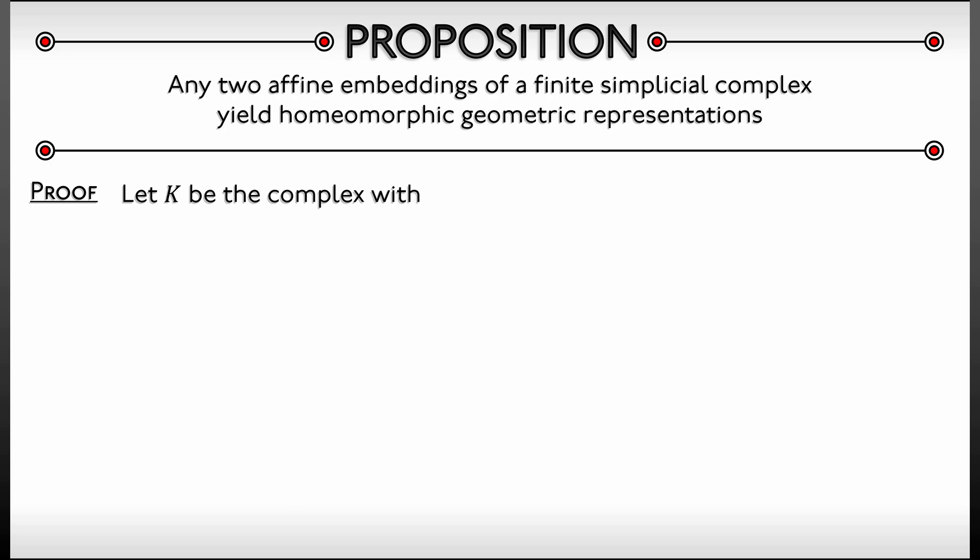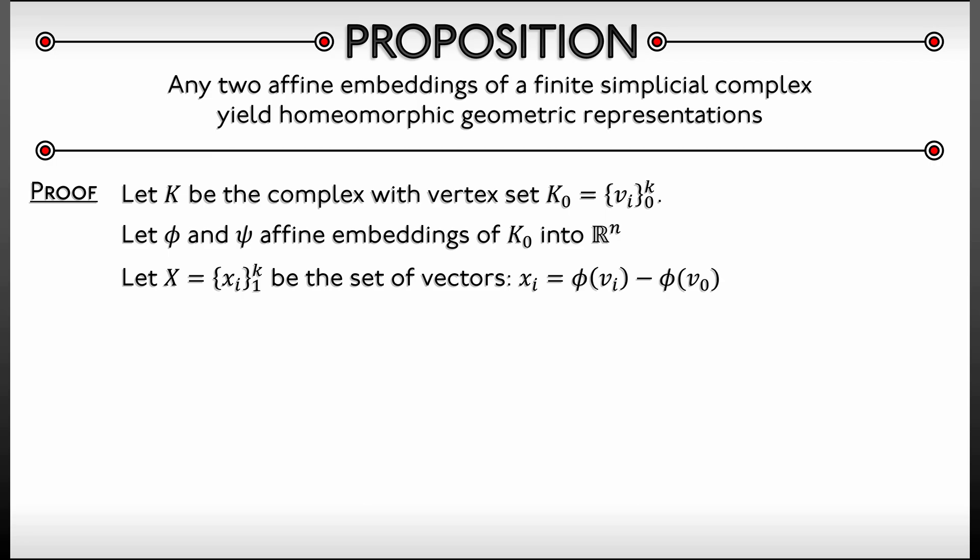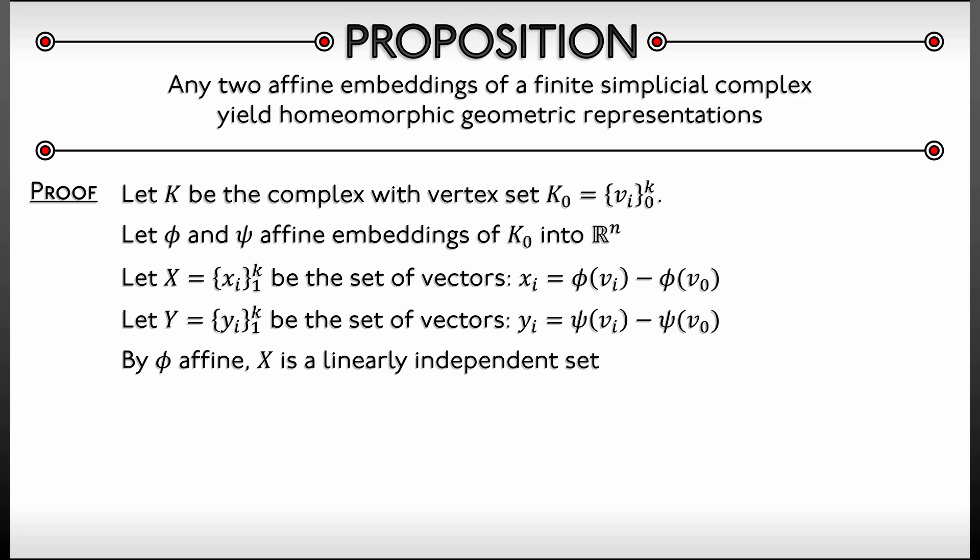Let's let your complex be K. Let the zero skeleton or the vertex set be vᵢ as i goes from 0 to k. Let's choose two affine embeddings, φ and ψ, from K₀ into Rⁿ. Since affine embeddings look at the collection of vectors that you get when you take differences, let us let capital X be the set of vectors xᵢ given by φ(vᵢ) minus φ(v₀). That's a collection of affine independent vectors based on φ. We're going to do the same thing for ψ and call that set capital Y, consisting of yᵢ. Since φ is an affine embedding, that means that this set capital X is linearly independent and it spans a k-dimensional subspace in Rⁿ. But of course, the same thing is true of ψ, because that too is an affine embedding. So we have capital Y as well.